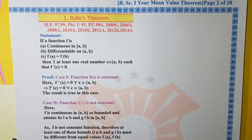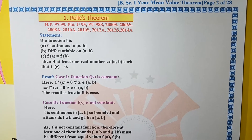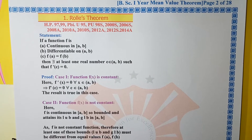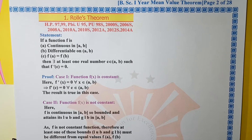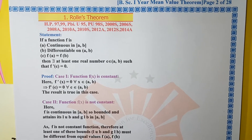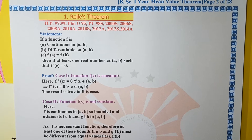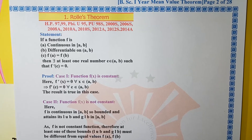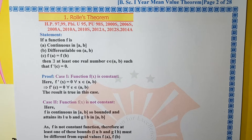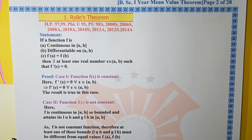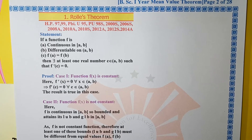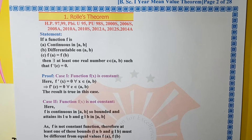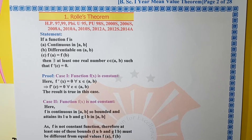Proof of Rolle's theorem is very important from the point of view of examination also. This is Rolle's theorem and the mean value theorem — the parent theorem — is very important with the proof of the process. If you listen to the proof of Rolle's theorem, you will have a clear understanding.